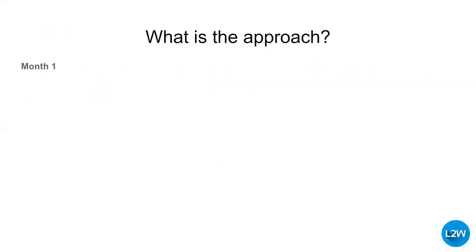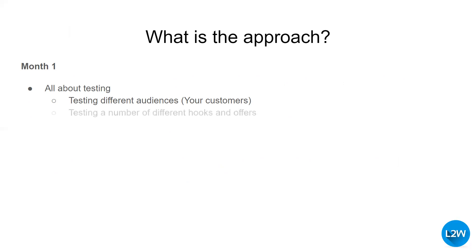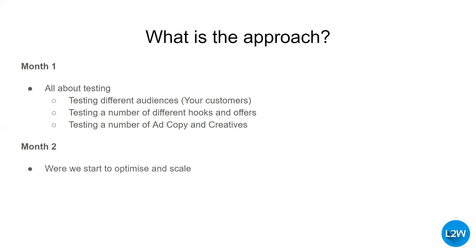It can take one to three months to generate leads from Facebook profitably. Month one is all about testing — testing different audiences, because your product or service may have different customer types. We also test different hooks and offers, which could be a discount, a guide, or a way in. It doesn't need to be a monetary value — it could just be a piece of content that adds value. Finally, we test a number of different ad copies to get your hook and offer in front of your target audience. Month two is where we start to optimize and scale based on what worked.